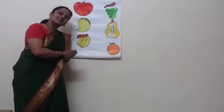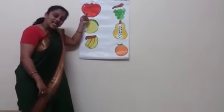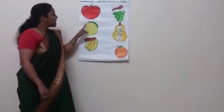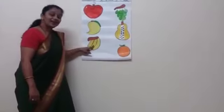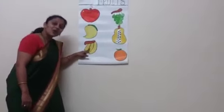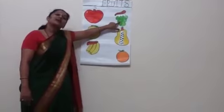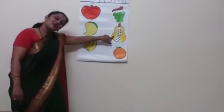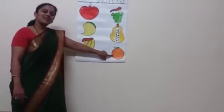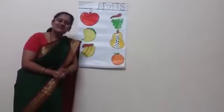So shall we start again with the names of fruits? Apple — red apple. Mango — yellow mango. Banana — yellow color. Grapes — green color. Papaya — yellow color. Orange — orange color. So I hope you like this video. Bye-bye.